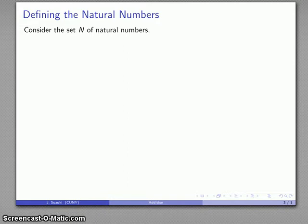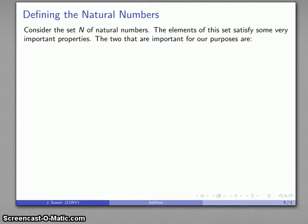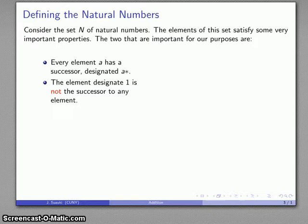And this led to the following. I can define the set N of natural numbers in the following way. And it's a set that satisfies a number of important properties, which Peano described in some detail, but the two that are important for our purposes are the following. Every number, every element of this set has a successor, which we designate A asterisk, A star. And that is, we can read this as, this is the number that follows A, the number after A.